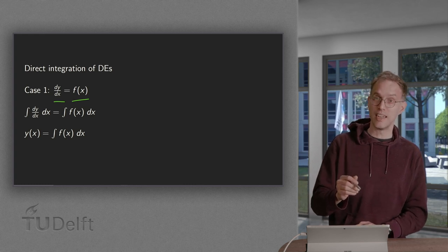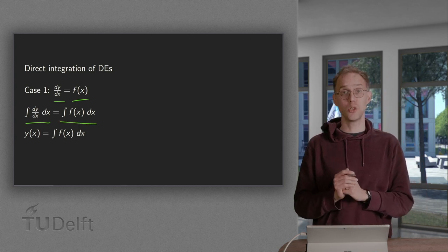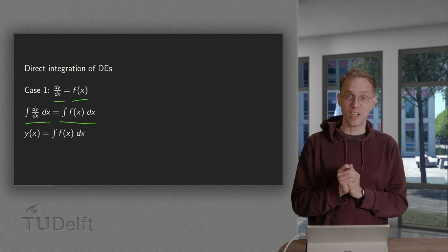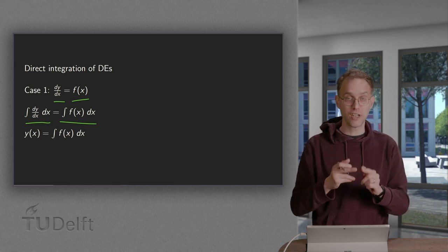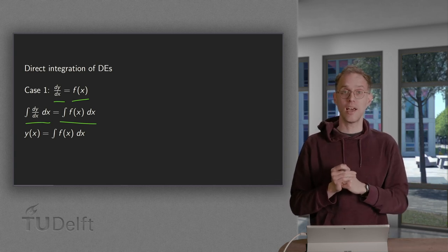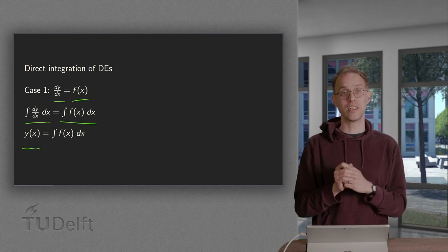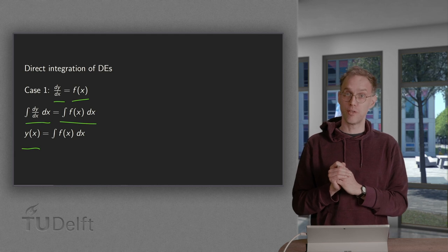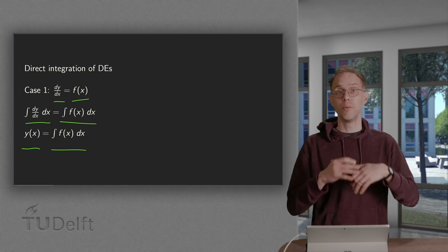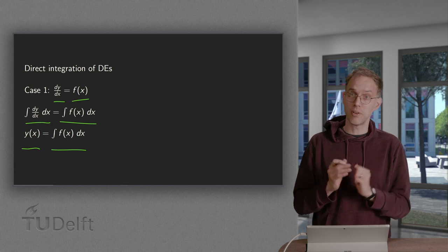In that case we can integrate the left-hand side and right-hand side directly with respect to x. If we integrate the left-hand side with respect to x, we first differentiate y with respect to x and then integrate with respect to x — those actions cancel out — so we get directly y(x) on the left-hand side. On the right-hand side we get the integral of f(x) dx, which is some integral we can evaluate analytically, depending on f(x).